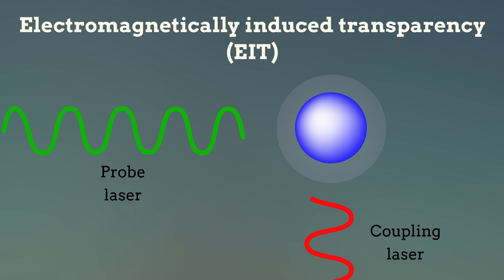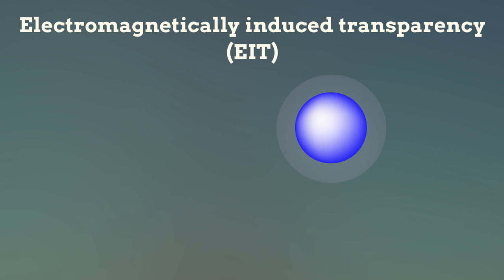If either laser alone were shown on the atoms, we would observe this excitation as the absorption of light by the atoms. But when both are turned on simultaneously, a quantum interference effect allows both beams to pass through, effectively making the absorbing material transparent.